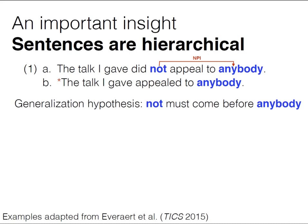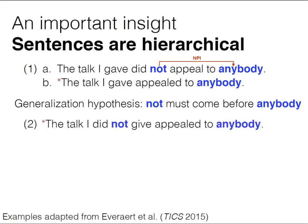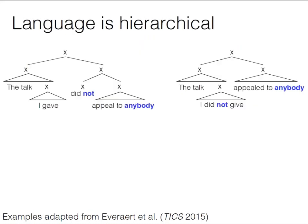A learner — say an RNN — might generalize that 'not' has to come before 'anybody'; otherwise the probability of 'anybody' should be really low. But then we might think the sentence 'The talk I did not give appealed to anybody' has a high probability. Native speakers of English will say that's a little funny. So what's actually going on here?